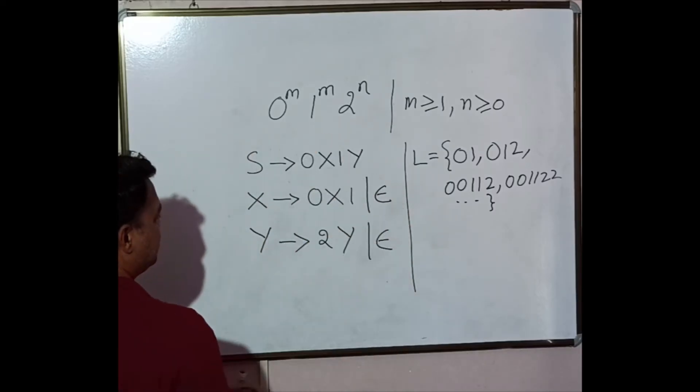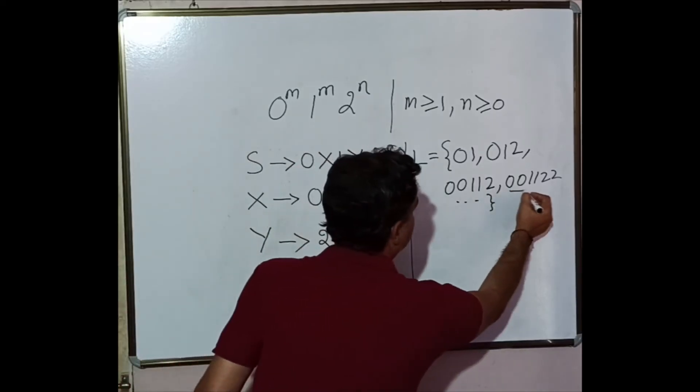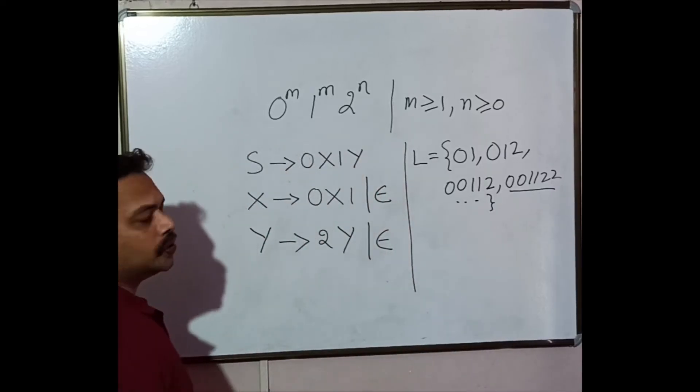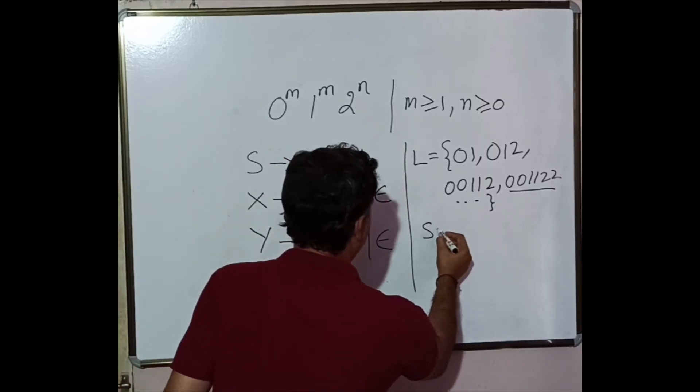Now let us cross verify the designed CFG for this particular string. That is 0, 0, 1, 1, 2, 2. Now we will start with S as start state.